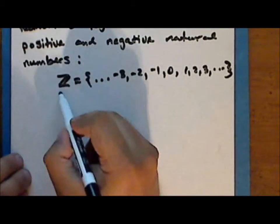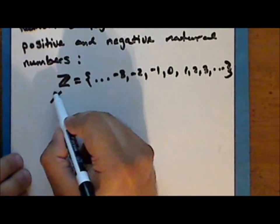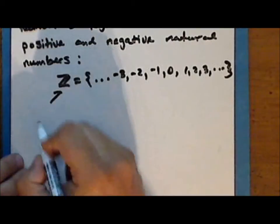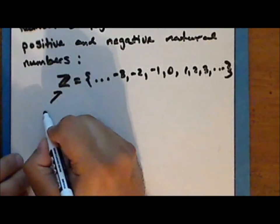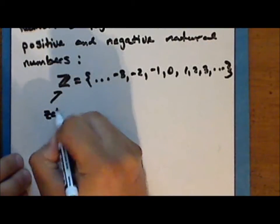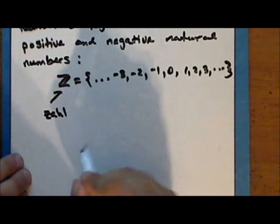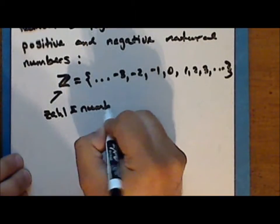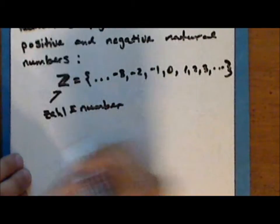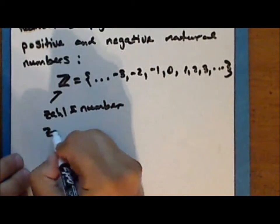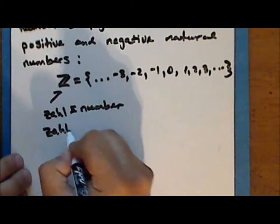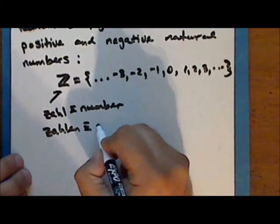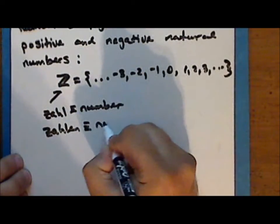The symbol for the integers comes from the German word Z, which means number (singular), or Z, which is the plural, numbers.